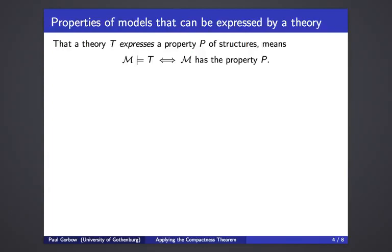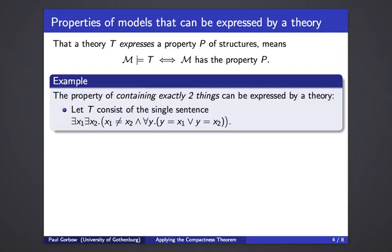Let's now look at properties and models that can be expressed by a theory. Recall: for every structure, M models T if and only if M has the property P — that's what it means to say that T expresses the property P. The first example is the property of containing exactly two things. This property is expressed by a theory consisting of just one single sentence, as written here. Please pause and verify for yourself that if M is a model of this theory it must have exactly two things, and conversely that if M contains exactly two things it also satisfies this sentence.